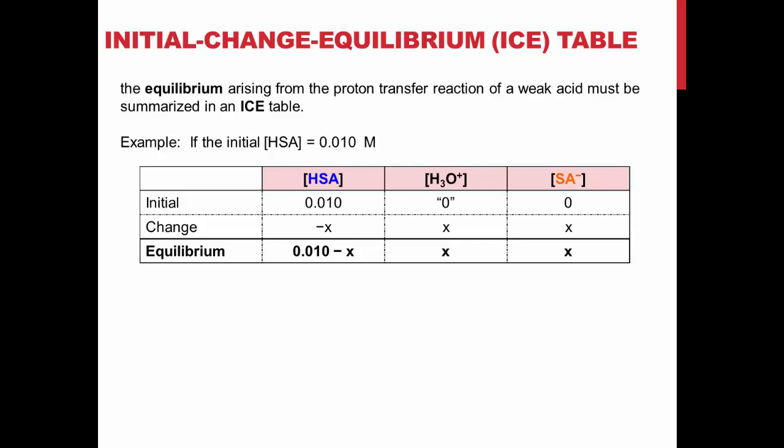This changes as salicylic acid dissociates and products are formed. The hydronium ion and the conjugate base are formed in stoichiometrically equivalent ratio to dissociation of HSA. This is put into the Ka expression as shown.